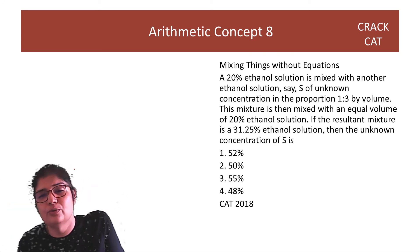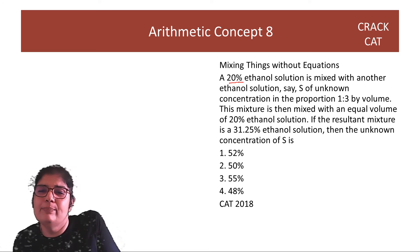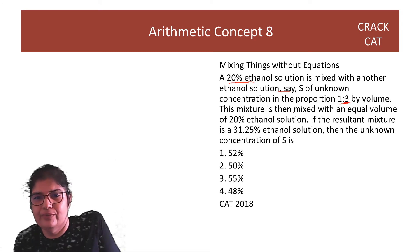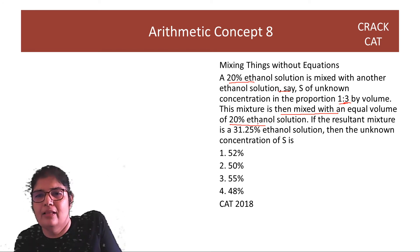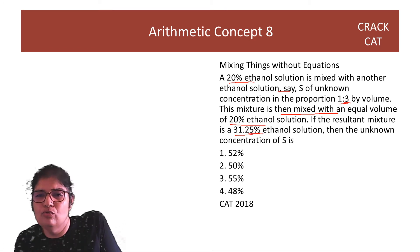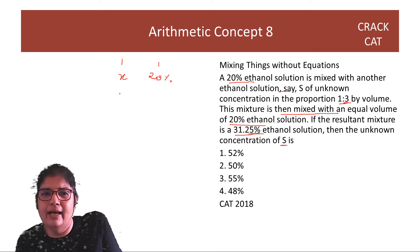Mixtures also do not use equations. Try and see whether you can work without it. So, 20% ethanol is mixed with another ethanol of unknown concentration in the proportion 1 is to 3. This is then mixed with an equal volume of 20% ethanol. The resulting mixture is a 31.25% ethanol solution. I have to find unknown the concentration. So, pehle toh, you have concentration X that you're mixing with 20% aur wo equal hai. Yeh agar ek hai, toh yeh bhi ek hai. And, yeh 31.25 ho gaya. Toh yaha pe 11.25 ka gap hai, toh yaha pe 11.25 ka gap hoga because the ratio of mixing is equal. So, this must be 42.5.